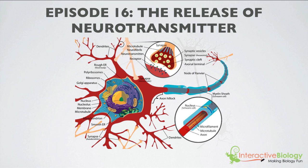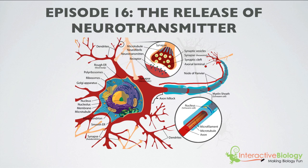We've been talking about the nervous system, we've been talking about neurons, and we've been talking about the action potential and how that travels along the neurons all the way to the ends of the neurons. What we're going to do today is we're going to focus a little more closely at the end of the neurons, the place that we call the axon terminal.